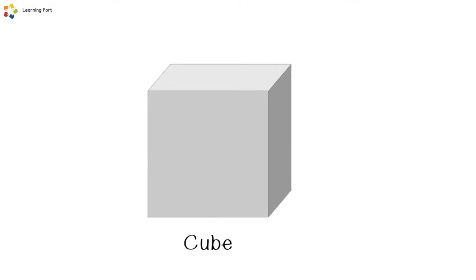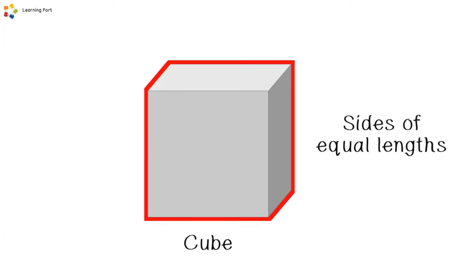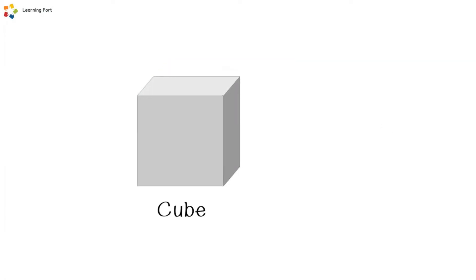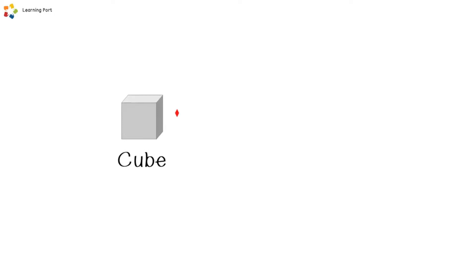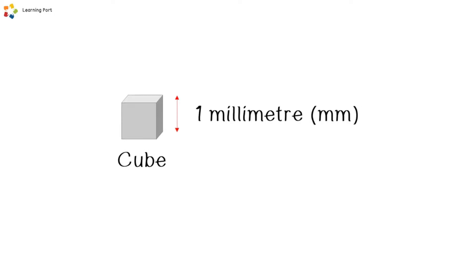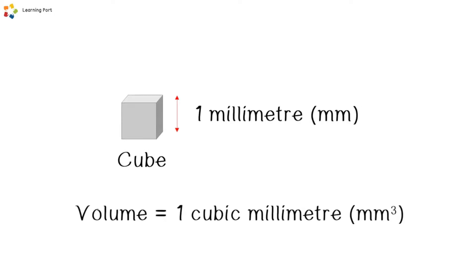Let's understand more about the units of volume using a cube. A cube is shaped like a box with sides of the same length. A cube with a side of one millimeter has a volume of one cubic millimeter.